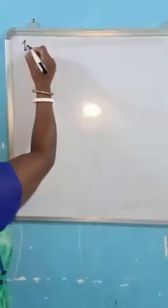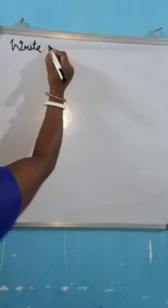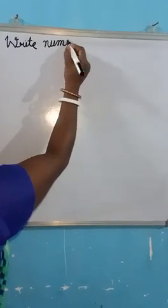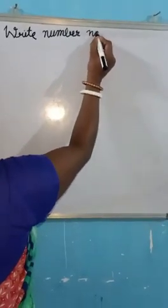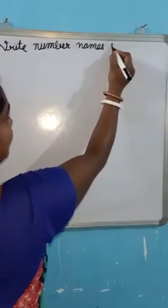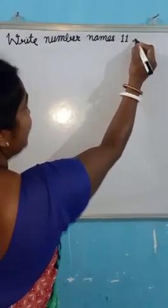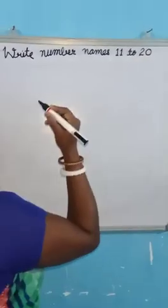Write W-R-I-T-E, write N-U-M-B-E-R, number N-A-M-E-S, names 1-1 to 2-0, 11 to 20. Okay.